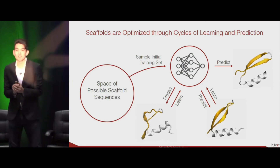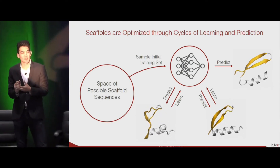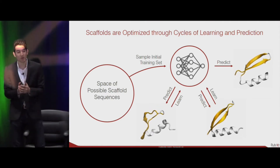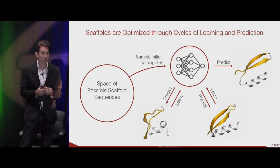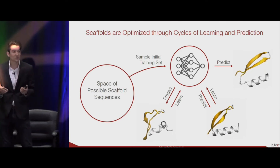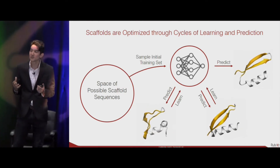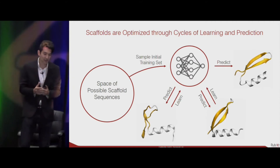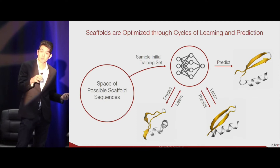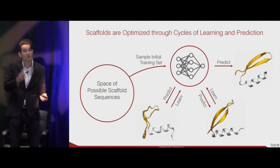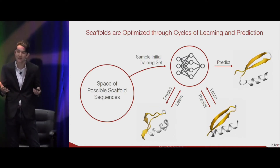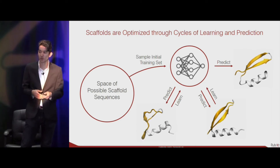Computational modeling technologies have matured significantly over the past decades, but we're still not at the point where we can screen the full space of possible scaffold sequences that might stabilize this epitope — that would take way too long. So we use an artificial intelligence approach to accelerate this process. Instead of a brute force search, we take a small sampling from that space of possible scaffold sequences, run molecular simulations on them, and use those to train a machine learning algorithm to predict the best stabilizing scaffold for our epitope.